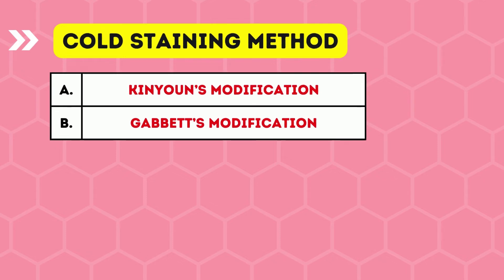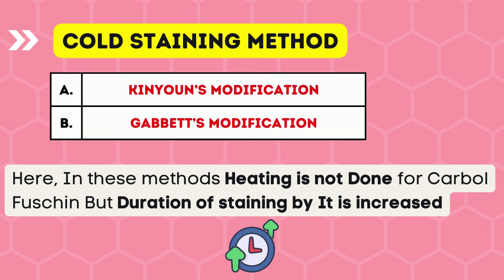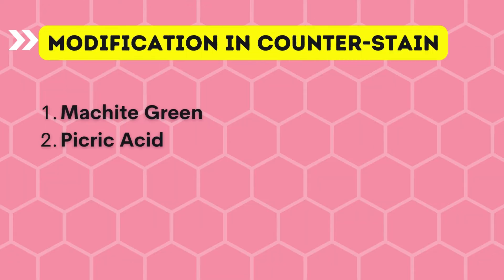The third aspect is the cold staining method, which is based on heating of the primary stain, carbol fuchsin. In methods like Kinoin's modification and Gabbitt's modification, heat is not applied to the primary stain. Instead, the duration of staining is increased to compensate for the lack of heating. This is why these methods are also called cold stain methods.